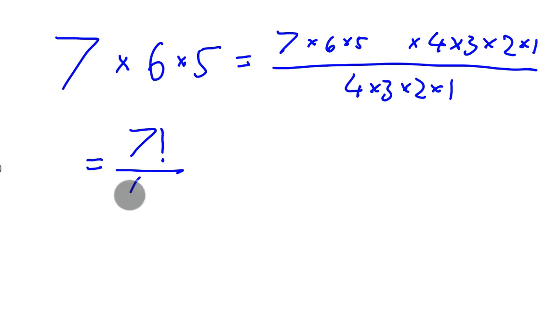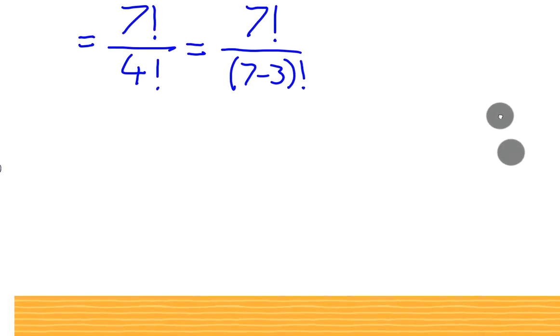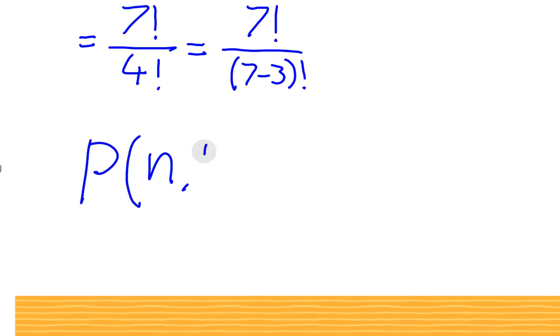Which can also be written—if we want to use the numbers that we had, 7 elements in 3 bins—as 7 factorial divided by (7 minus 3) factorial. Or if you want the general equation, the general equation would be P(n, k) equals n factorial divided by (n minus k) factorial.